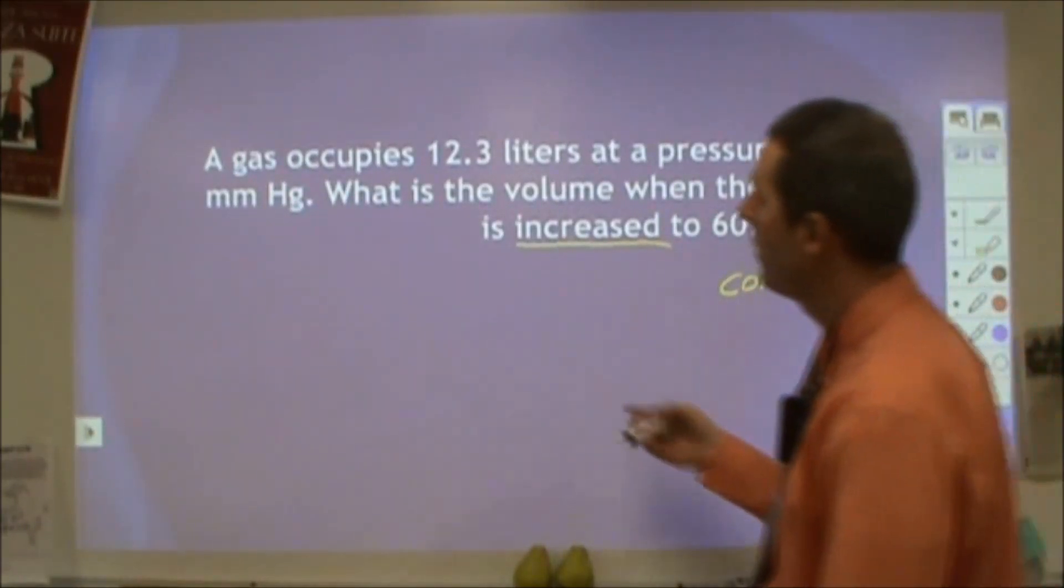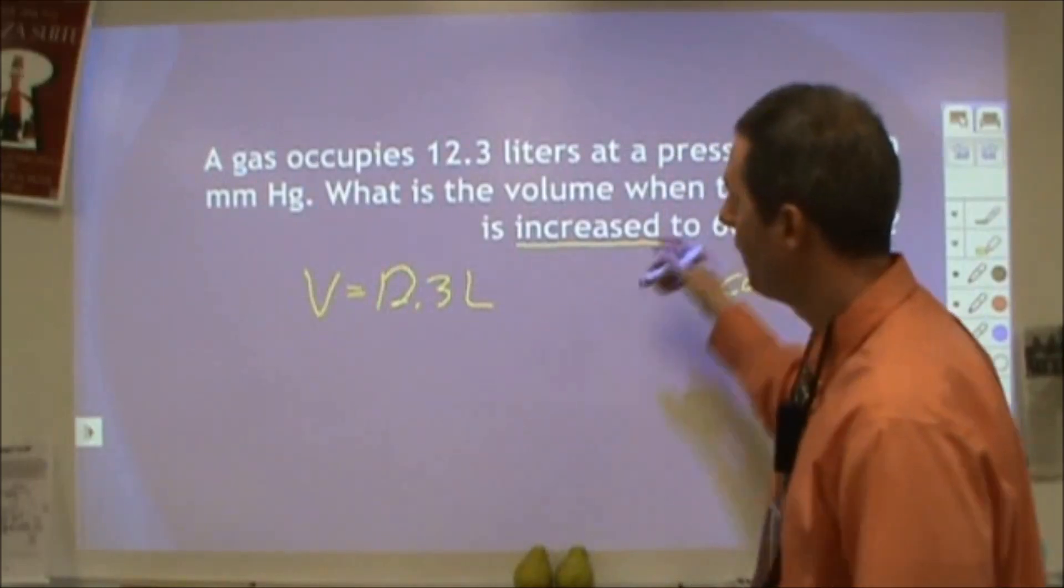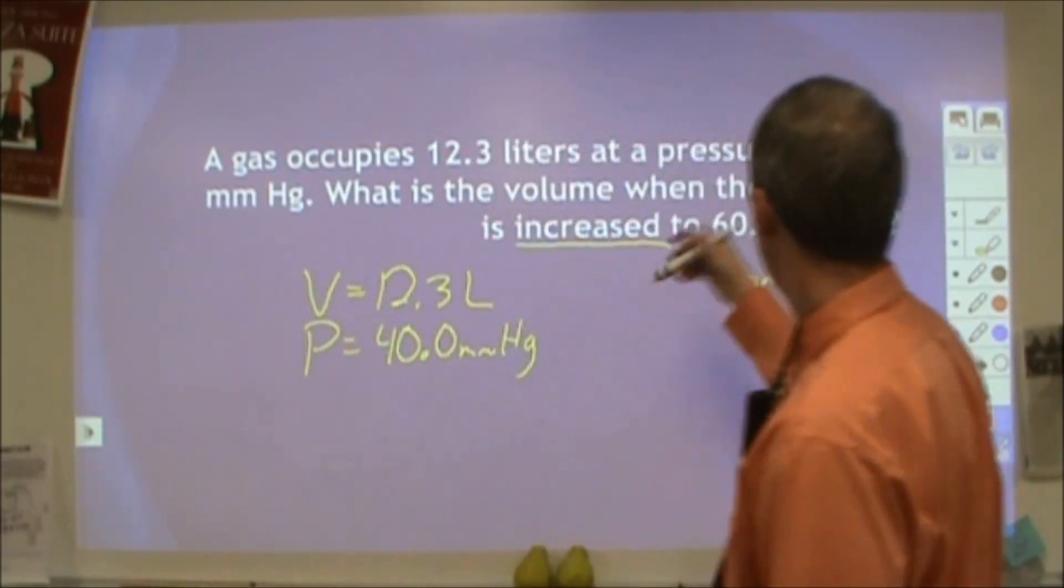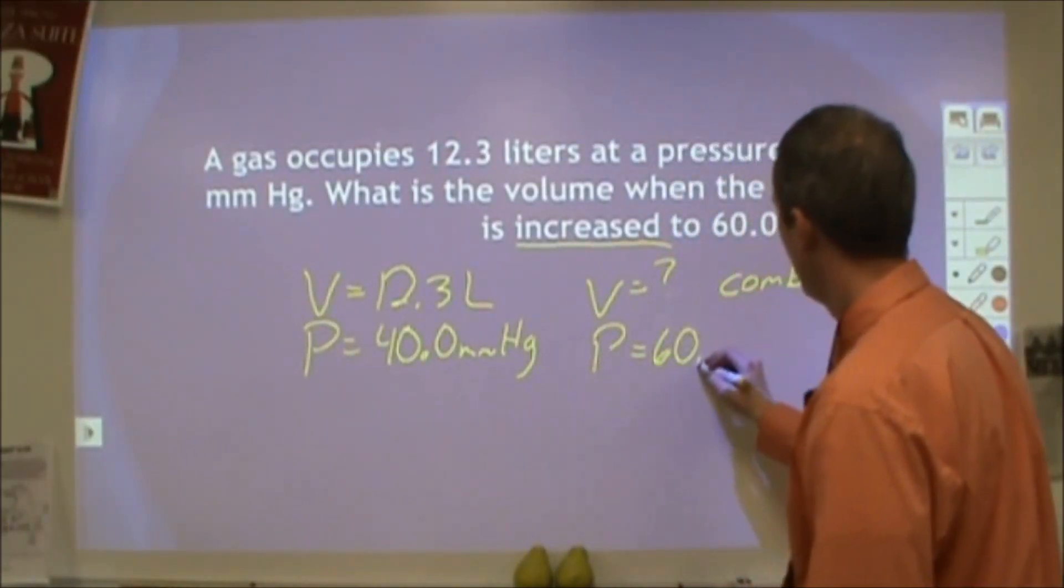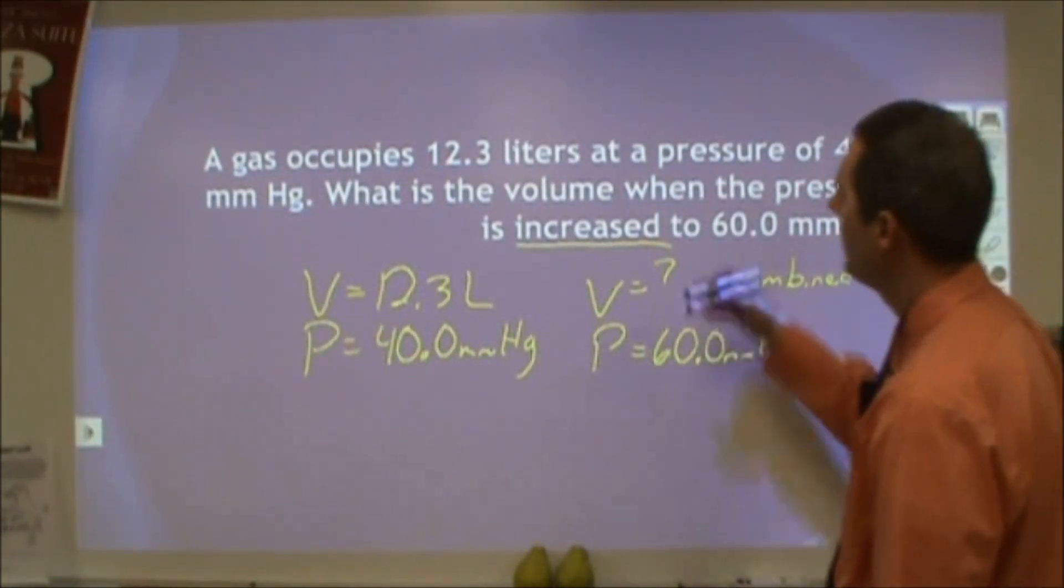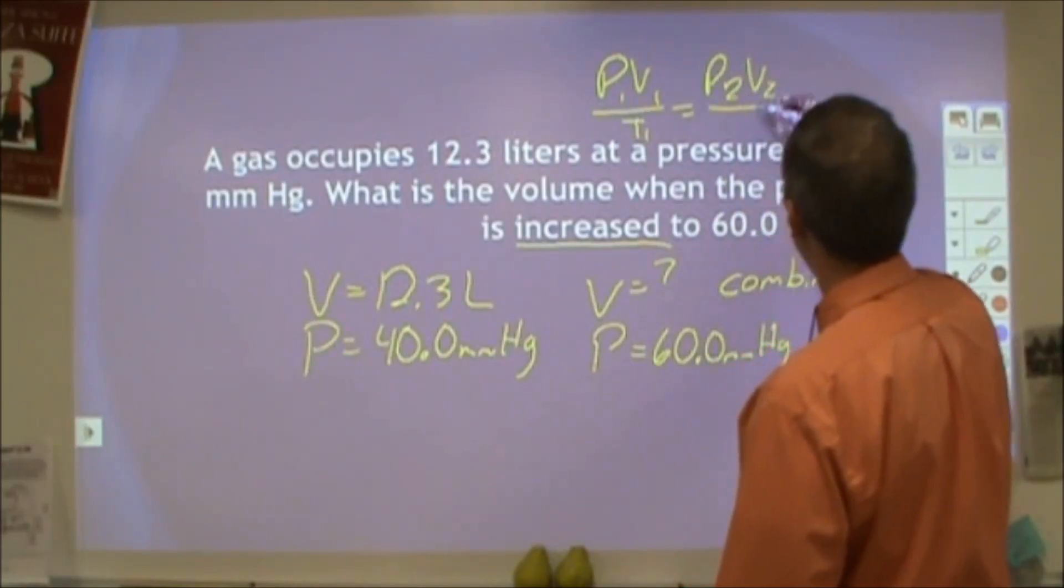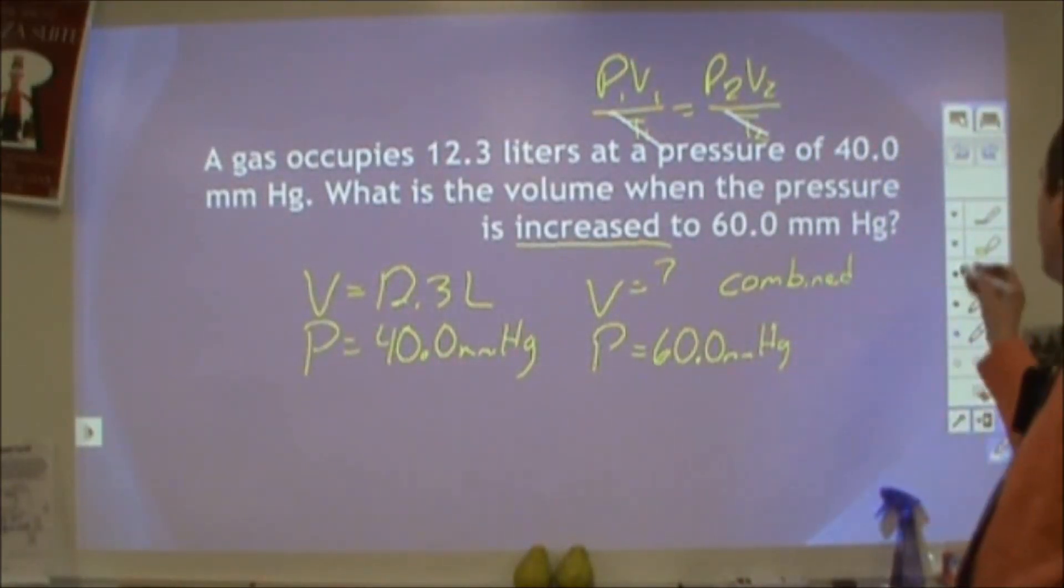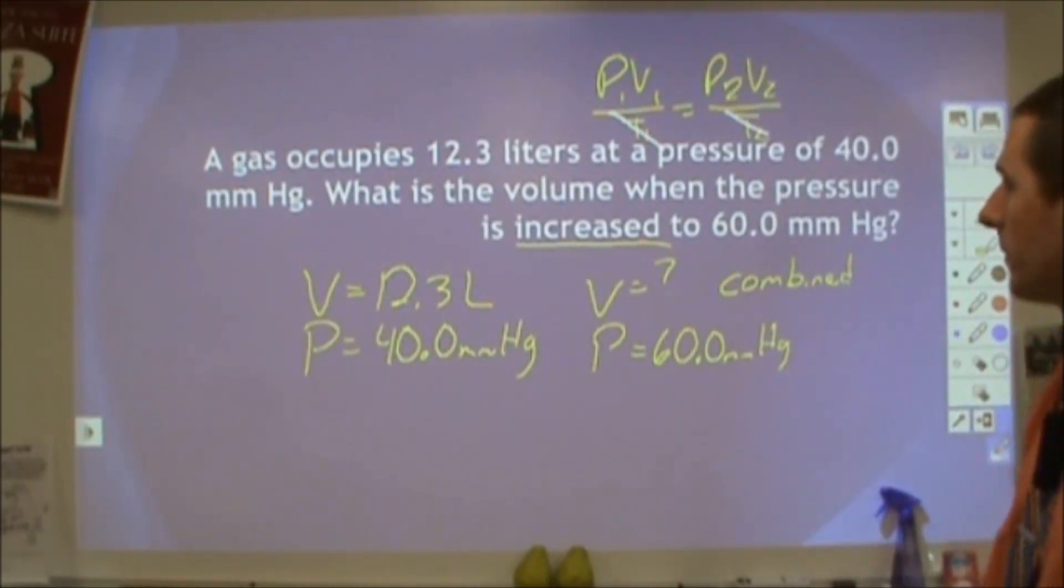Now a good way to confirm that is just to write down what I know. I have 12.3 liters, that's a volume. Pressure of 40 millimeters of mercury, that's a pressure. And it says what would the volume be when the pressure is increased to 60 millimeters of mercury? So in this particular problem, I'm looking at a pressure and volume, pressure and volume, that means that I'm going to be using pressure of volume over temperature. And in this case, my temperatures are constant. So any time they omit something from there, you're pretty safe to assume that that means that those are held constant. So I'm really looking at Boyle's law, simplified down from the combined gas law.